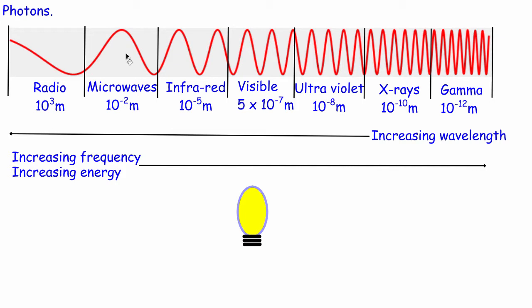When you study GCSE physics and this particular topic, you will have learned that the electromagnetic spectrum is simply a family of waves and it forms a continuous spectrum. At one end of the electromagnetic spectrum we've got radio waves, moving all the way through to the other end where we've got gamma rays.